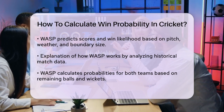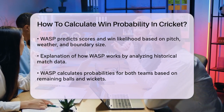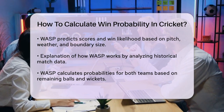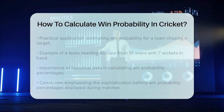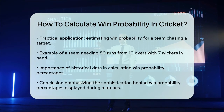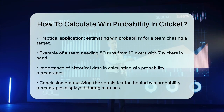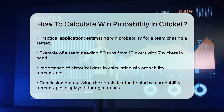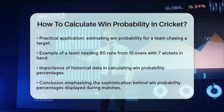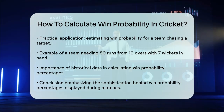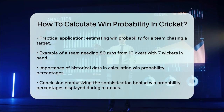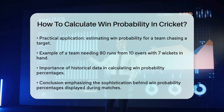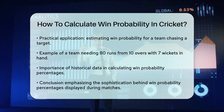In practical terms, if a team is chasing a target, the model will consider how many runs they need to score, how many wickets they have left, and how many balls are remaining. It then calculates the probability of them achieving this target based on historical data and the current game conditions. For example, if a team needs 80 runs from 10 overs with 7 wickets in hand, the model will look at past matches where teams were in similar situations and calculate the average success rate. This gives a clear picture of the team's win probability at that moment in the game.